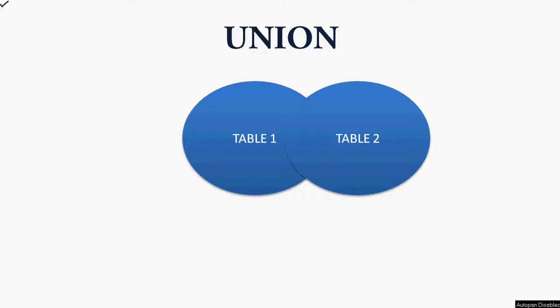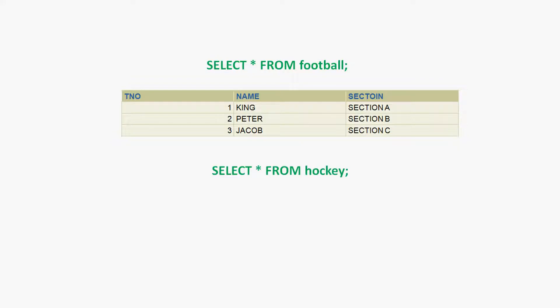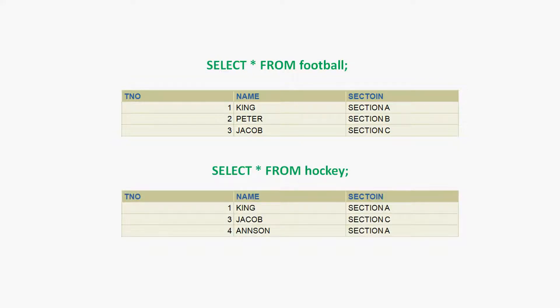Better we will see the example. Suppose we have a table called football and here we can see the football table data. Also we have a table hockey and here we can see that table data. Here we are going to combine the result of these two tables, football and hockey. We can see that the number of columns on both tables are 3, and all the column data types are similar on both tables.